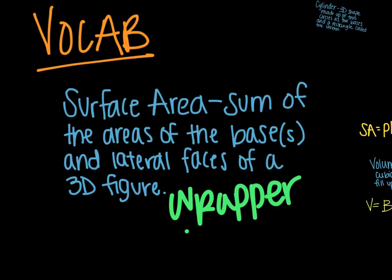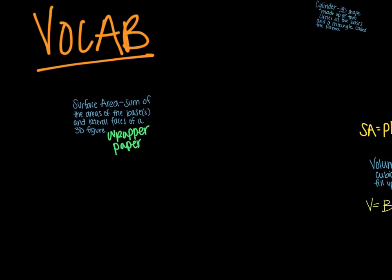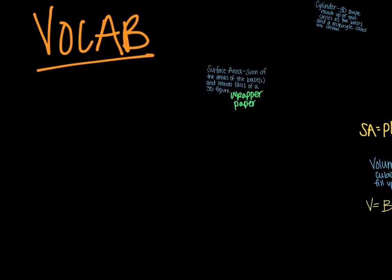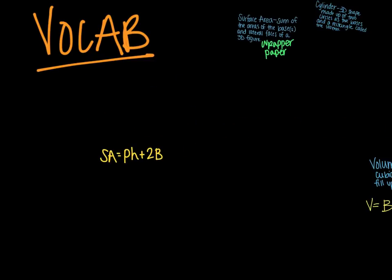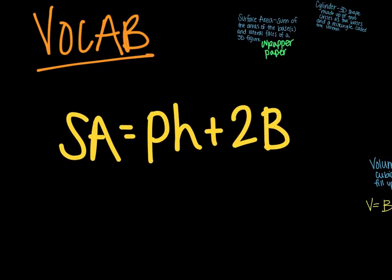If you were to cover a present completely, how much wrapping paper would you need? The formula for surface area is SA equals pH plus 2B, which is found on your formula sheet.